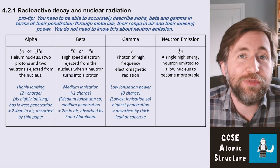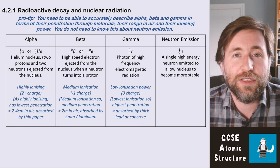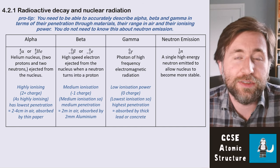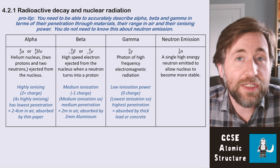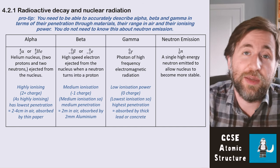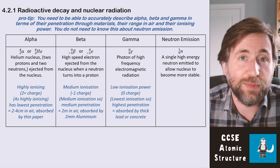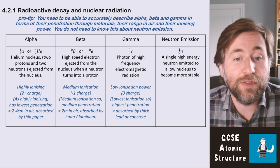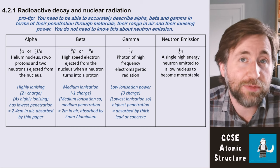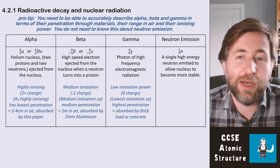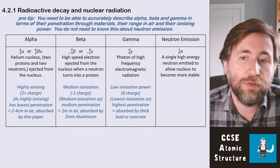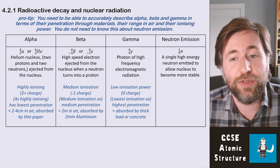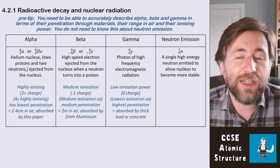Beta has medium ionization because it has a charge of minus one — about half that of an alpha particle — and it also moves fast, which makes it less ionizing since it doesn't spend much time near atoms. It has medium penetration: it travels up to about two metres in air and is absorbed by two millimetres of aluminium. Gamma is not very ionizing at all because it has zero charge, making it the most penetrating; it is absorbed by thick lead or concrete and has an almost infinite range in air.